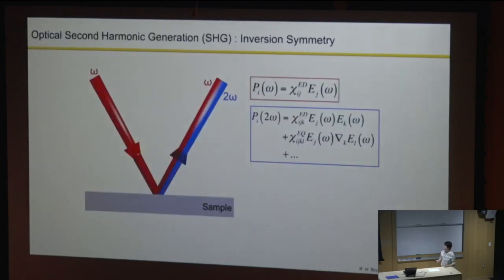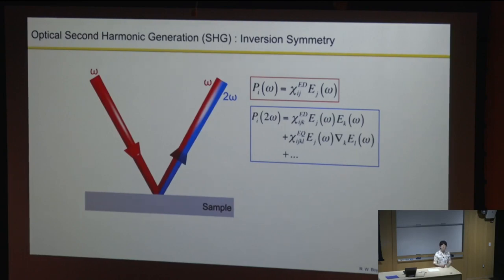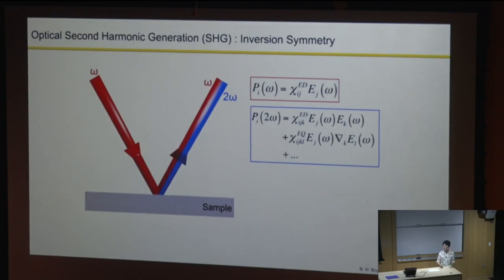The technique—SHG. For the leading-order electric dipole response, P equals chi·E·E. If you assume your material has inversion symmetry and apply the inversion operation to both sides, it forces P to be zero. That's why people always say SHG is super sensitive to inversion symmetry breaking: its leading-order electric dipole contribution vanishes in systems with inversion symmetry. But as we develop better detectors and can measure smaller SHG, people started to find that even in materials normally having inversion symmetry, you can still see SHG.